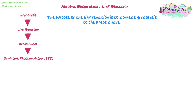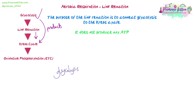The purpose of the link reaction is to link the glycolysis reactions to the Krebs cycle, which happens inside the mitochondria, while glycolysis happens outside. It takes the products of glycolysis into the Krebs cycle — that's its job. It does not produce any ATP; it is literally just a transfer point. In glycolysis, glucose was split into two molecules of pyruvate, and the point of the link reaction is to take that pyruvate from outside, into the mitochondria, and prepare it to enter the Krebs cycle.